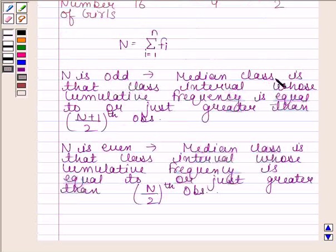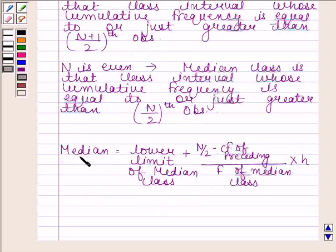If N is odd, then the median class is that class interval whose cumulative frequency is equal to or just greater than the (N+1)/2 th observation. Then we calculate the median: median equals lower limit of median class plus N/2 minus cumulative frequency of preceding class interval, divided by frequency of median class, into h, where h is the width of the median class.